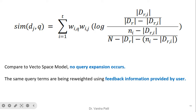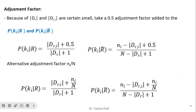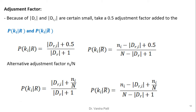Compared to the vector space model, no query expansion occurs here — no new terms are added to the original query. The same query terms are re-weighted using feedback information provided by the user. Since values can sometimes be zero, a smoothing or adjustment factor is used. A 0.5 adjustment factor is added to avoid zero answers or divide-by-zero errors: 0.5 is added to the numerator and 1 is added to the denominator. Similarly, an adjustment can be made using Ni/N in the numerator instead of 0.5.